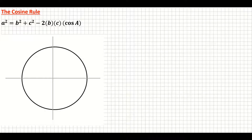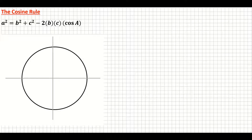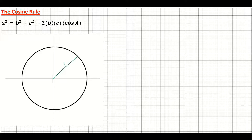Before we get into the proof of the cosine rule, we need to do a little bit of revision of our unit circle. There's a more in-depth video which will explain the unit circle in more detail, so perhaps have a look at that first. But just a very quick revision: the unit circle is a circle with a center of (0, 0) and a radius of 1 unit.